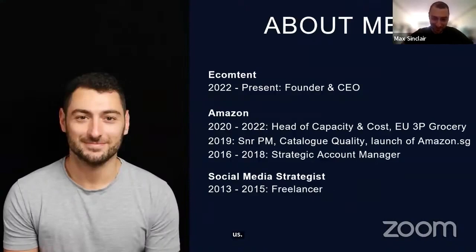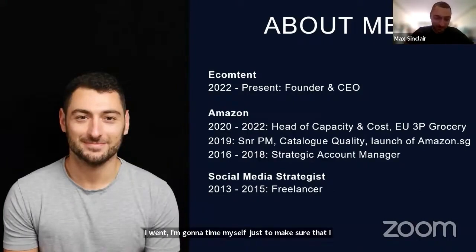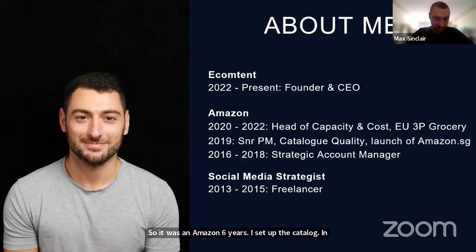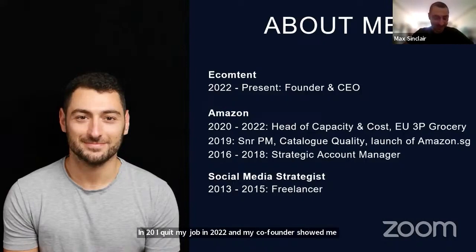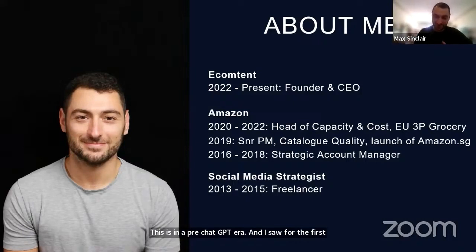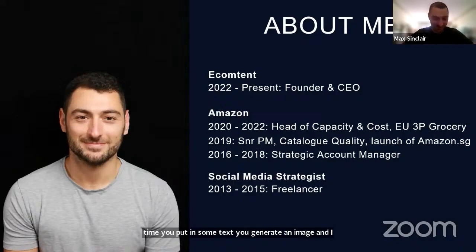I was at Amazon for six years. I set up the catalog in Singapore and ran the 3P grocery business in the EU. I quit my job in 2022 and my co-founder showed me Stable Diffusion — this was in a pre-ChatGPT era. I saw for the first time: you put in some text, you generate an image, and I thought this is going to absolutely revolutionize e-commerce. We have been building e-content since then — e-content stands for e-commerce content.